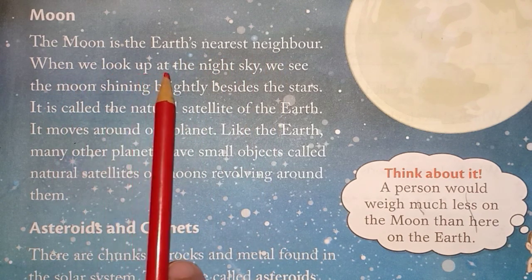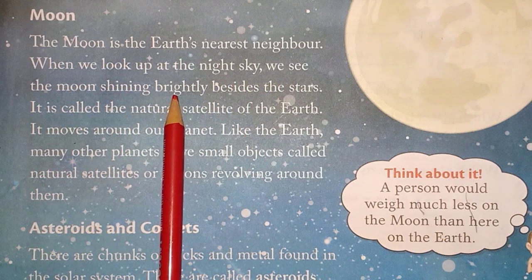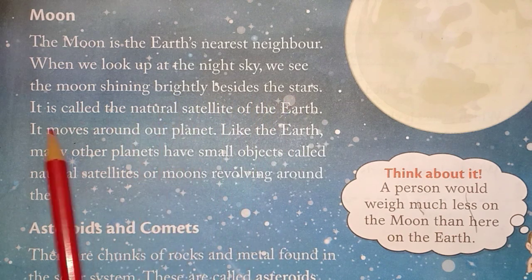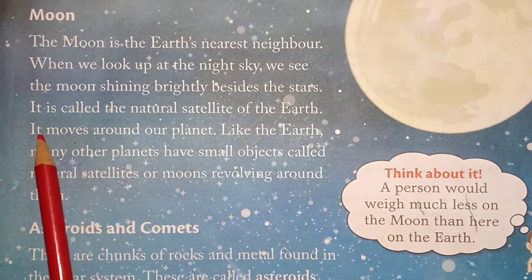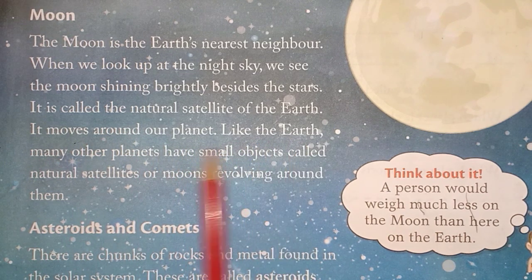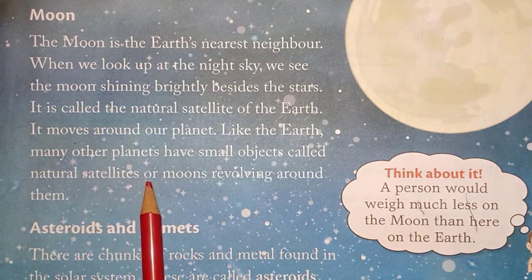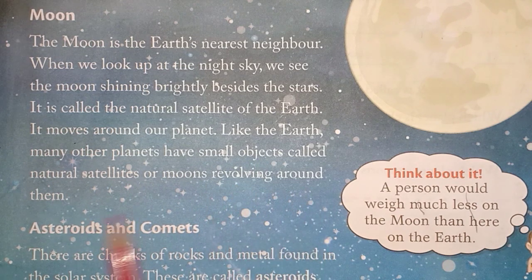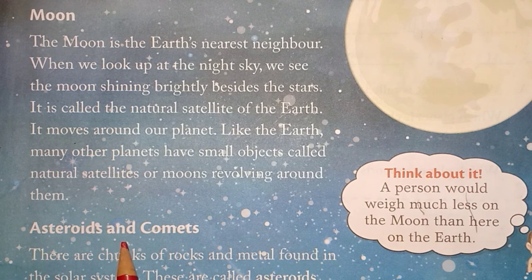When we look up at the night sky, we see the moon shining brightly among the stars. It is called the natural satellite of the Earth, and it moves around our planet. Many other planets also have small objects called natural satellites or moons revolving around them — some planets have 27 moons and some have as many as 65 moons.